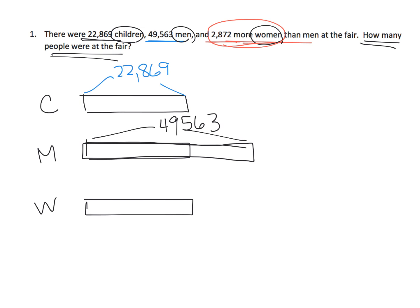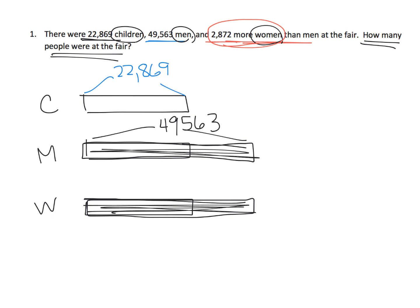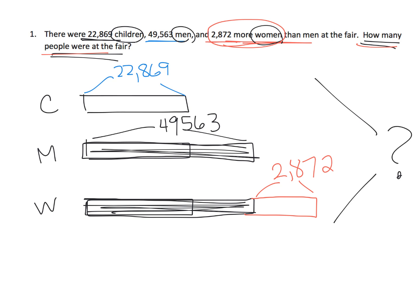So that means, first off, I've got to extend the women tape to match the men. Now they're equal. So this length and this length are both 49,563. But then we're told that there are more women by 2,872. And the question is how many people were at the fair — they want us to figure out the total number. So the total number of women is 49,563 plus this extra 2,872 women.